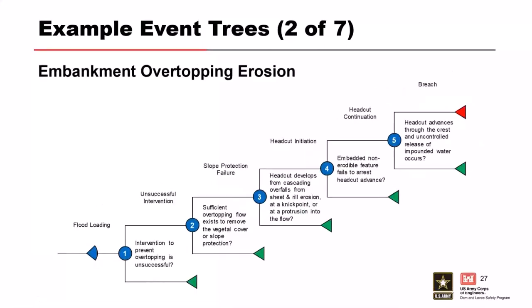The next example is embankment overtopping erosion, one of the more common failure modes in current risk assessments. As discussed, this is one potential failure mode where the intervention node is placed early in the sub-event tree. Generally this is a shorter sub-event tree, but take care not to over-shorten it by combining unrelated events. The sequence is: flood loading, unsuccessful intervention to prevent overtopping, sufficient overtopping flow to remove vegetative cover or slope protection, headcut develops from cascading overfalls, embedded non-erodible feature fails to halt headcut advance, and then the breach node — headcut advances through the crest leading to uncontrolled release of pool.